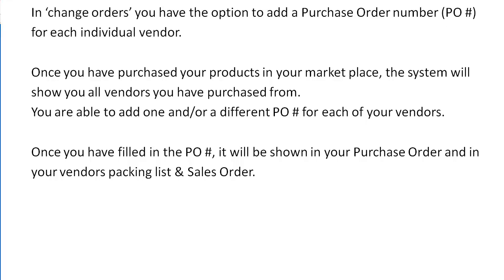Once you have purchased your products in your marketplace, the system will show you all vendors you have purchased from. You are able to add one or a different purchase order number for each of your vendors. Once you have filled in the purchase order number, it will be shown in your purchase order and in your vendor's packing list and sales order.